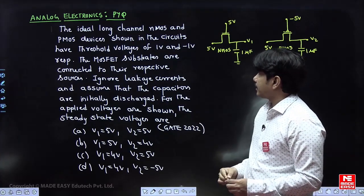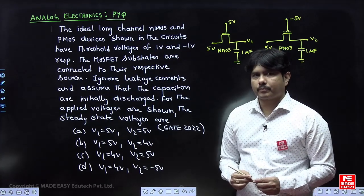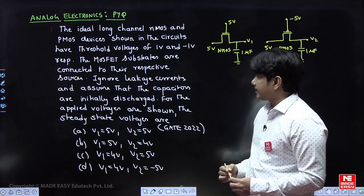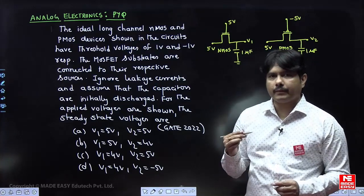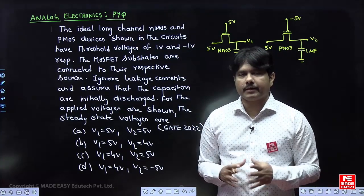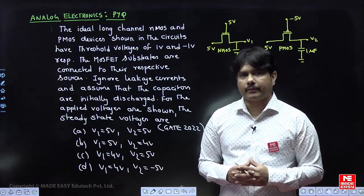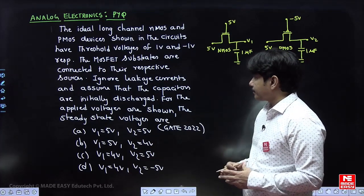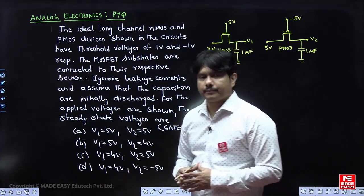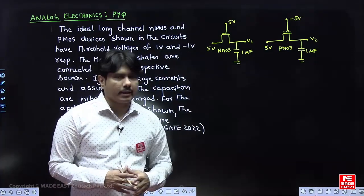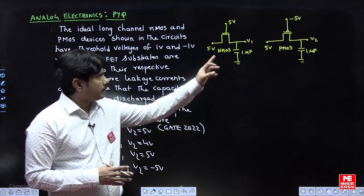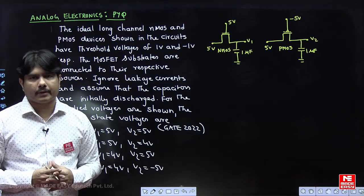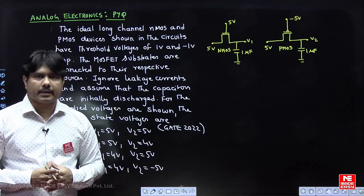The MOSFETs' substrates are connected to their respective sources. Ignore the leakage currents, so there are no leakage currents. Assuming that the capacitors are initially discharged — meaning the capacitor does not have any voltage, it is an empty capacitor. For the applied voltages shown, the question asks for the steady-state voltages V1 and V2 across the two capacitors.